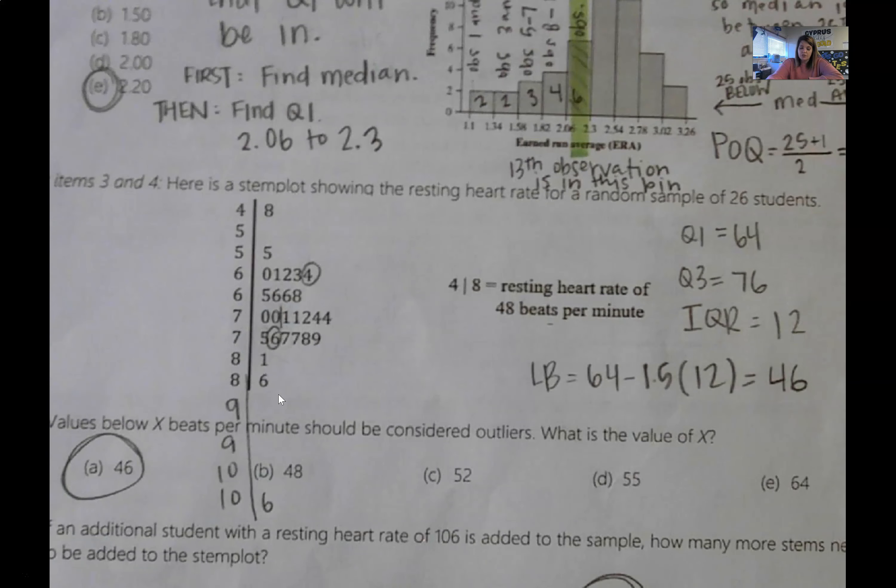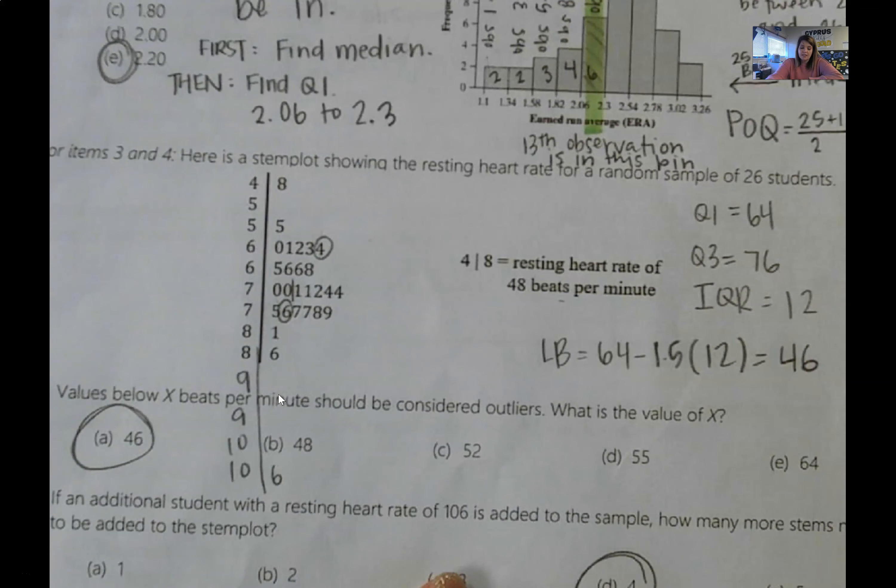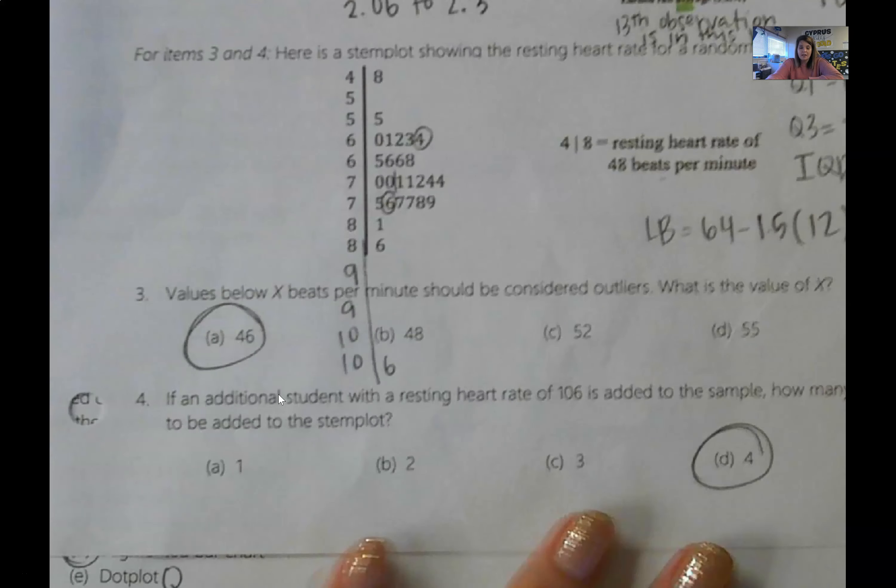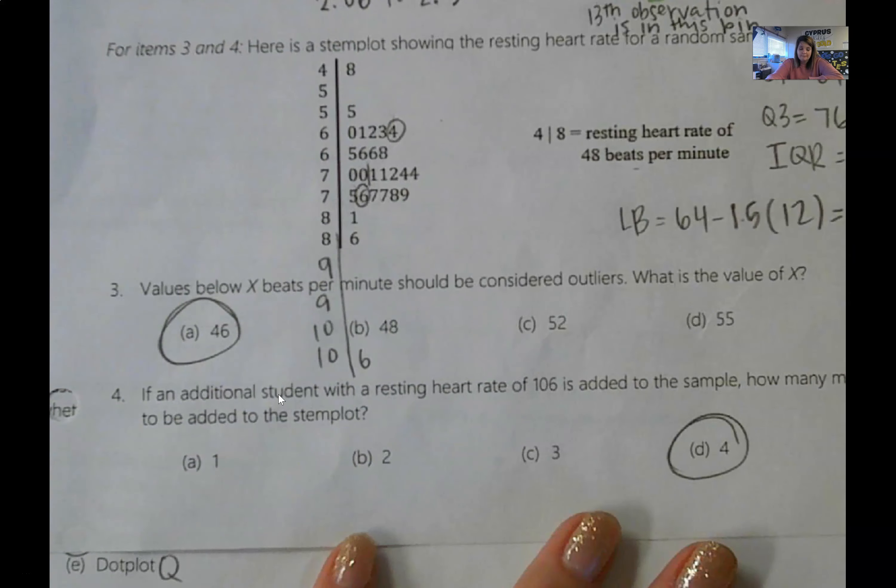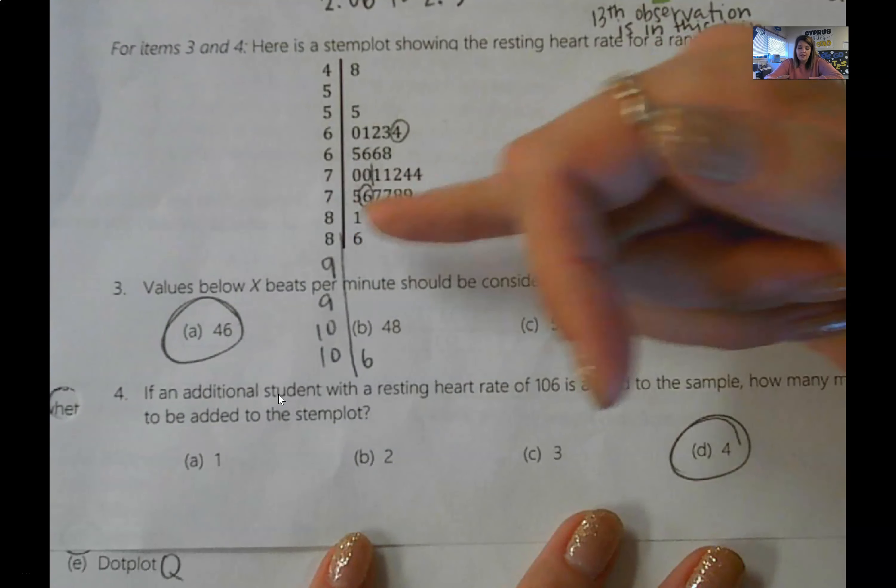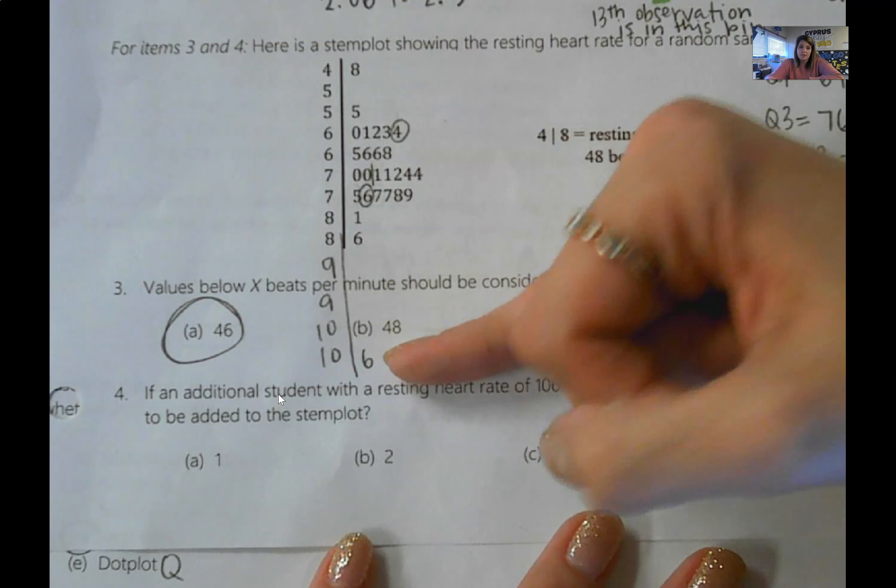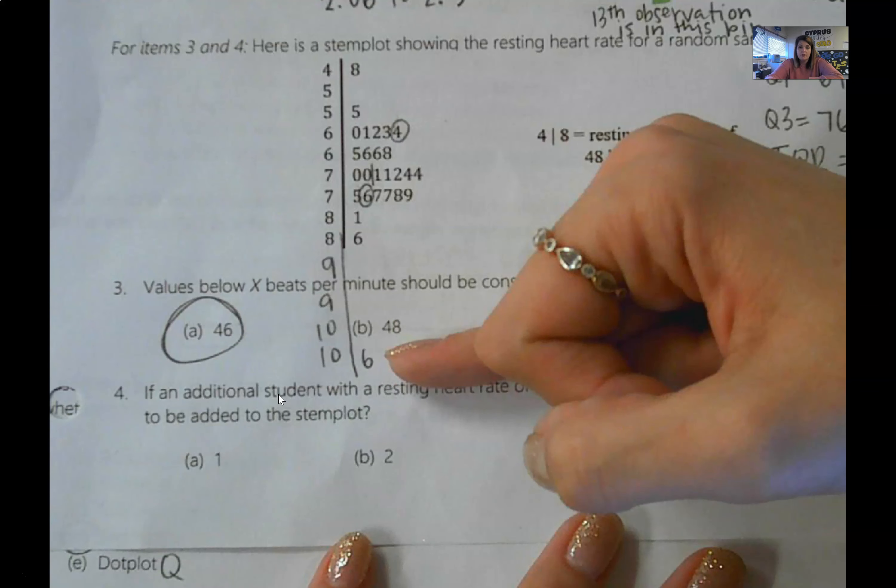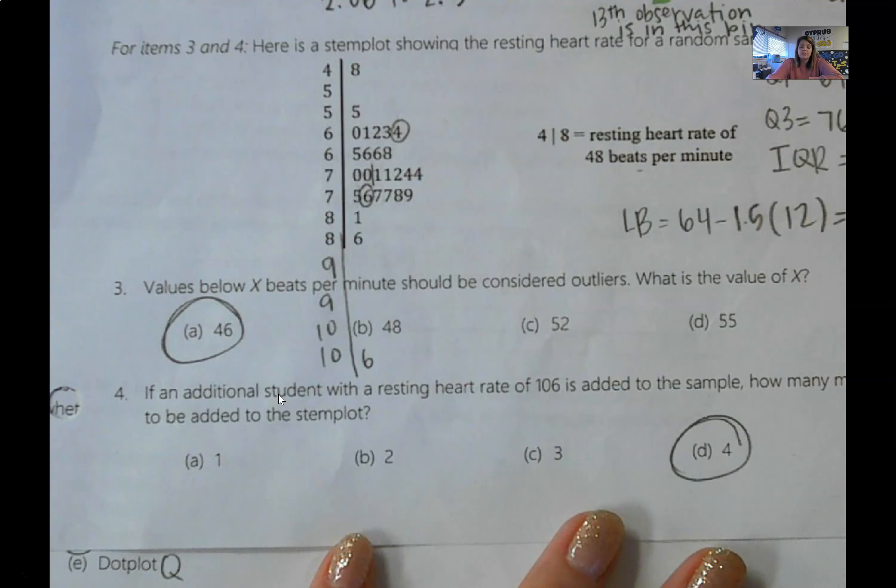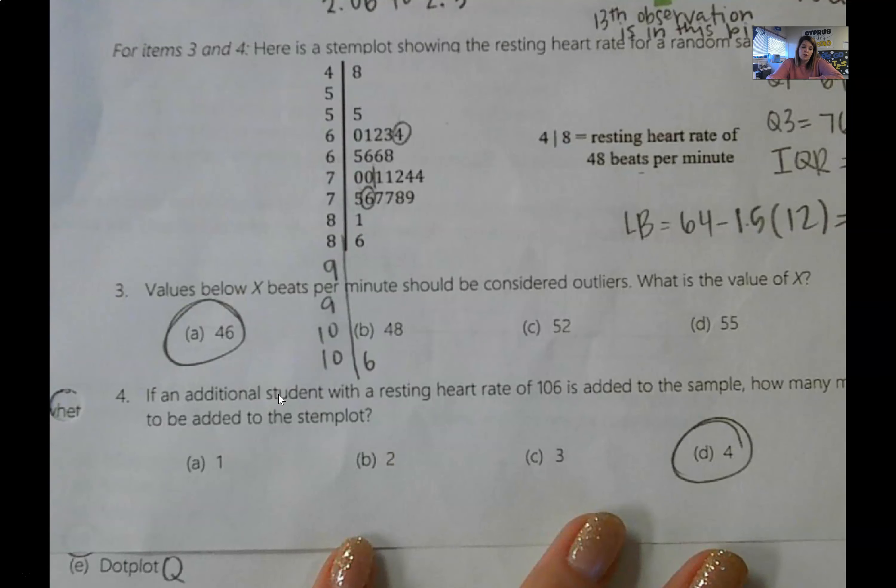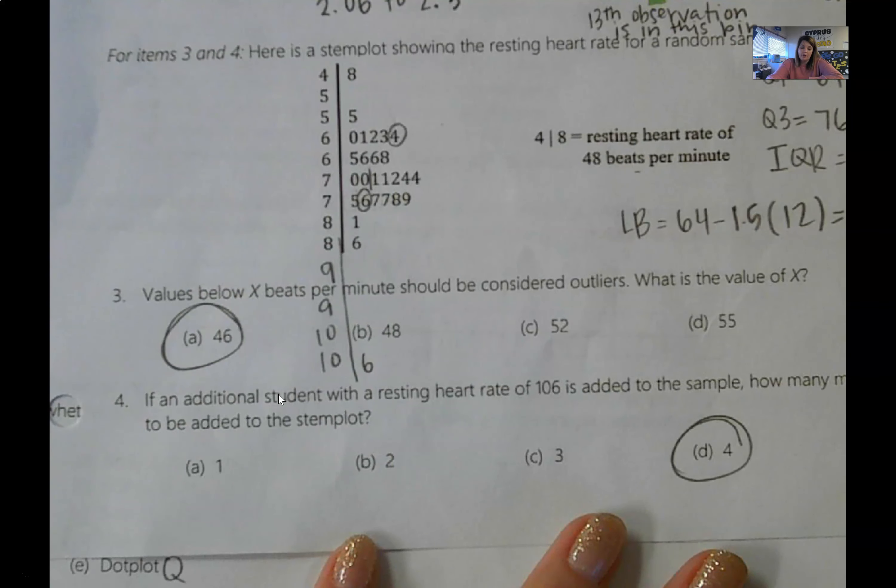If we have an additional student at a heart rate of 106, how many stems would need to be added? I just put them on. So we have eight, nine, 10. You would need four because 106 would be on the upper stem. So this is delta. So page one was Charlie Echo Alpha Delta.